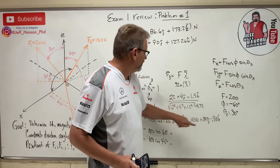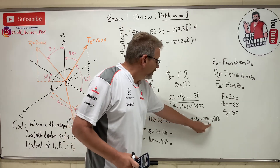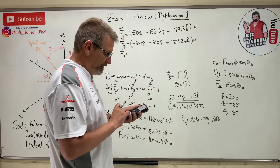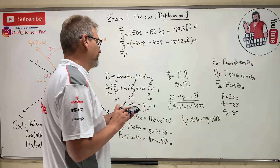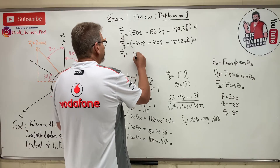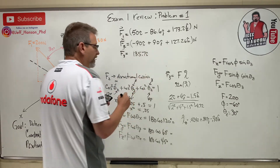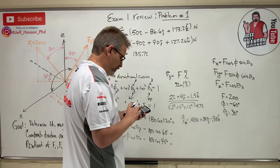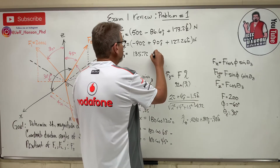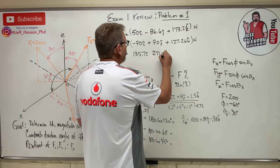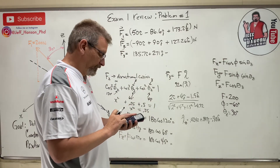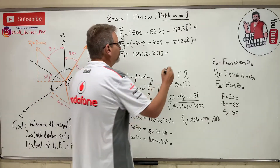Squaring and summing the unit vector components should give 1 — always check that. Now multiply λ̂ by 320: F3_x = 0.424 × 320 = 135.7N, F3_y = 0.847 × 320 = 271.0N, F3_z = −0.318 × 320 = −101.8N.